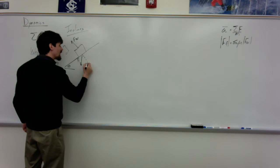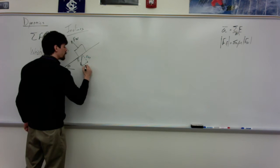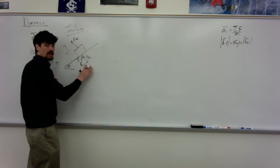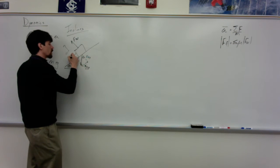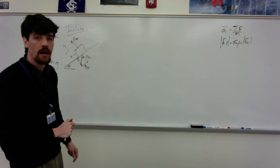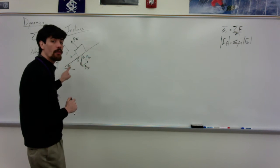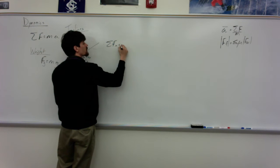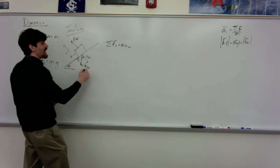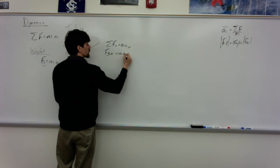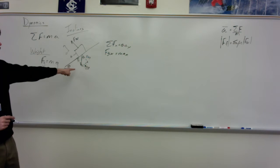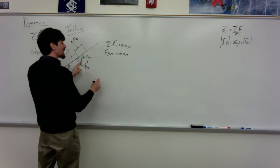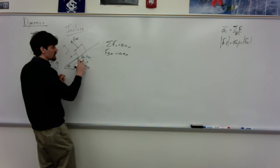We can break force gravity into components: FGY and FGX. The angle theta is at the base. FGX is the component of force gravity directed down the plane. So in this case the object would be accelerating down the ramp. For the x-direction, the sum of forces in x equals mass times acceleration in x. Down the ramp we have FGX = max, and FGX equals FG times sine theta.